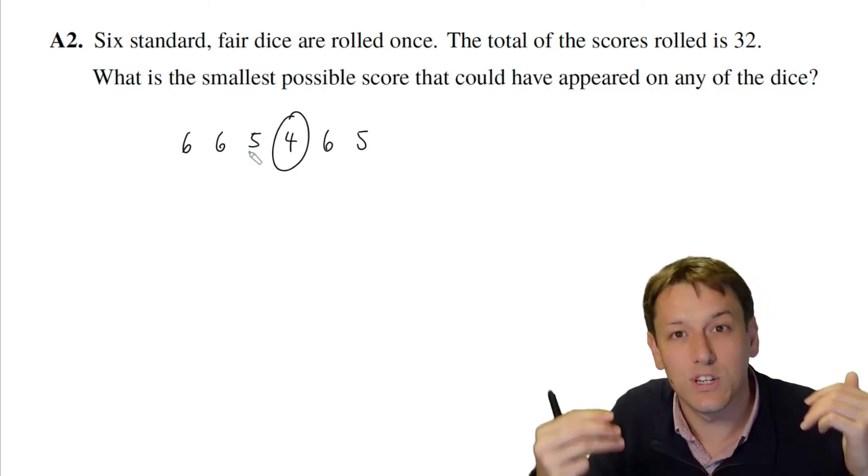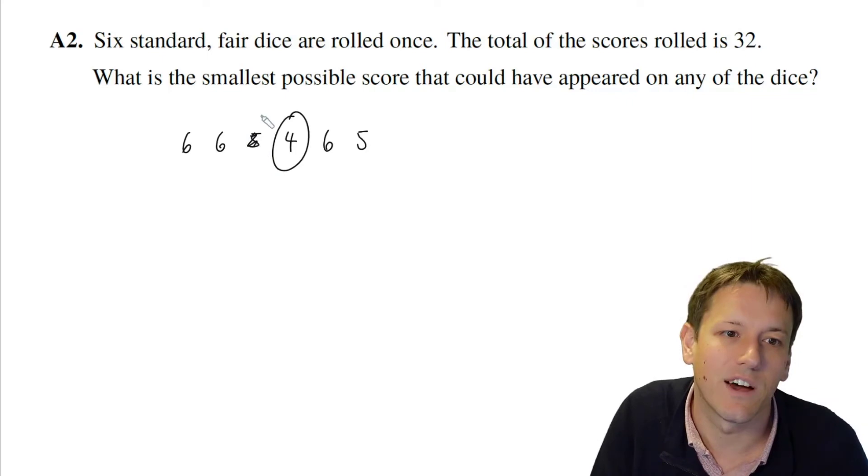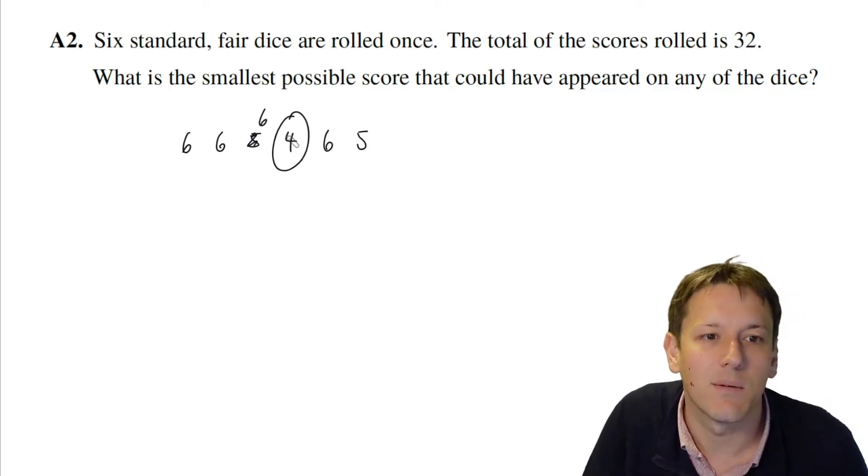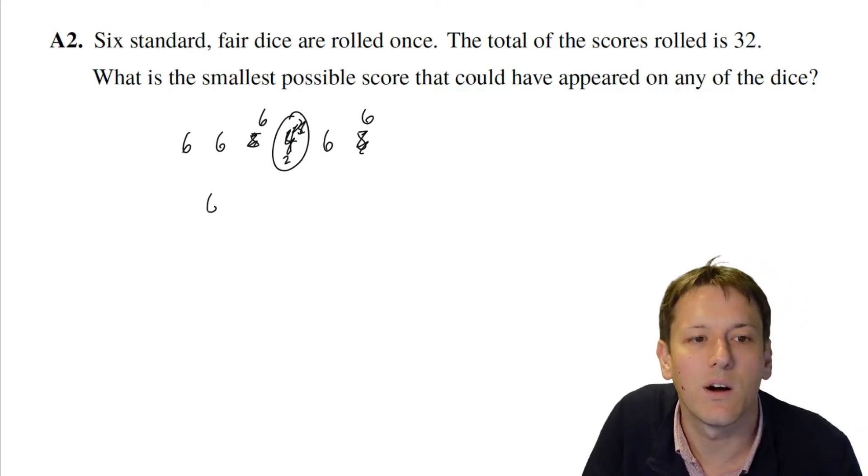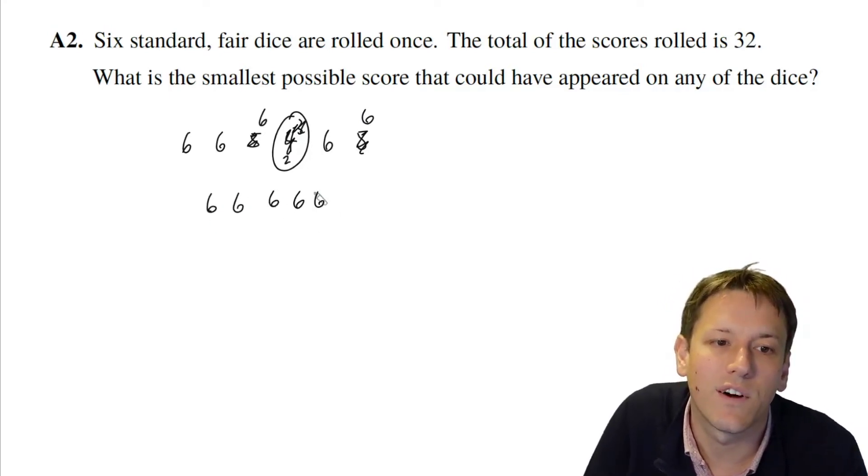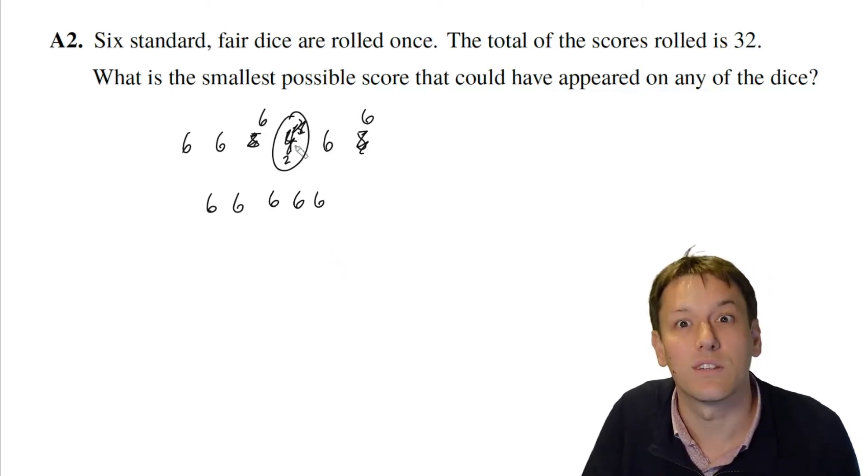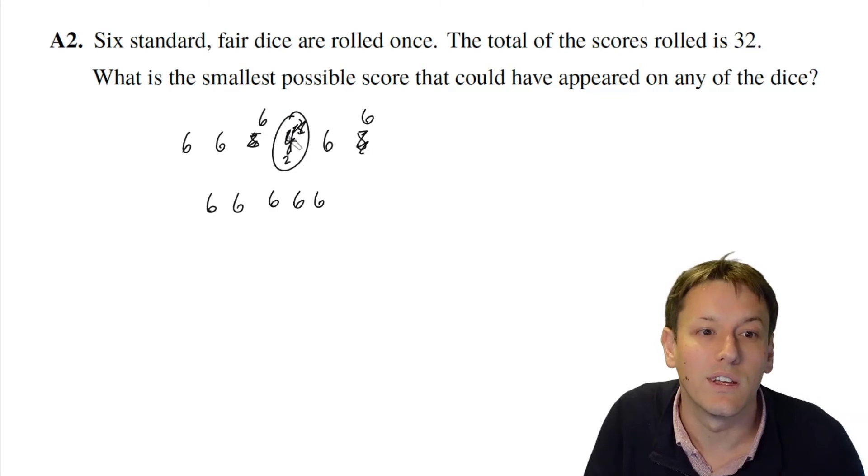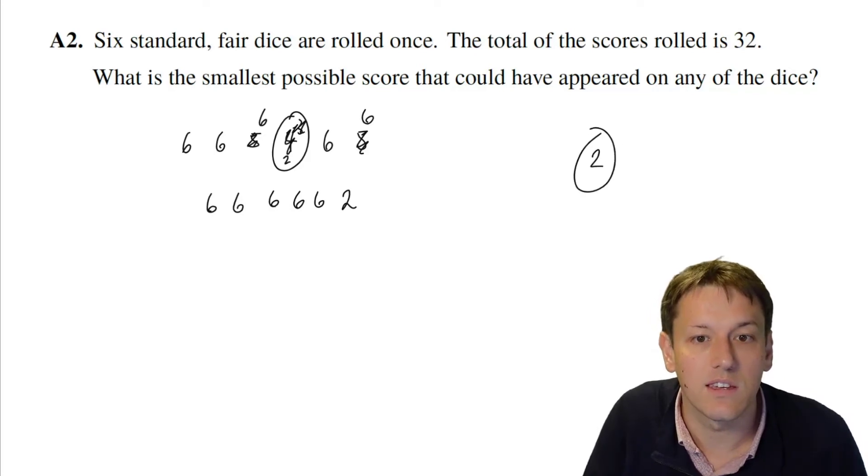Instead of having a 5 here I could have a 6, and then I could bring this down to 3. Instead of having a 5 here I could bring this one up to 6, and then I could get this down to 2. So somehow by making the other 5 dice as big as possible, making them all 6, that gives me the smallest possible that could be on one individual die, which is 2. So the answer here is 2.